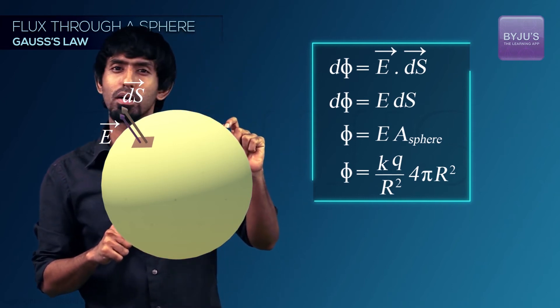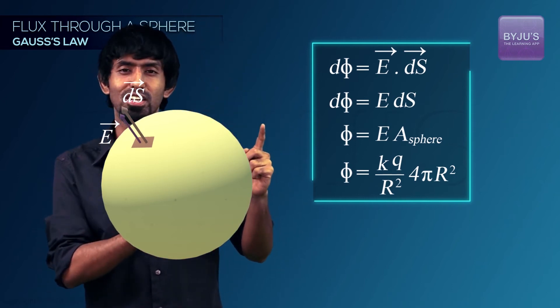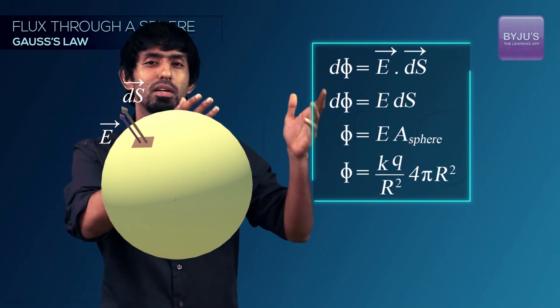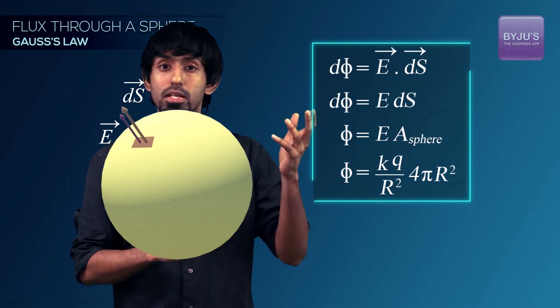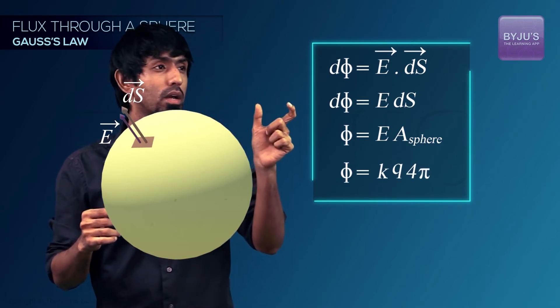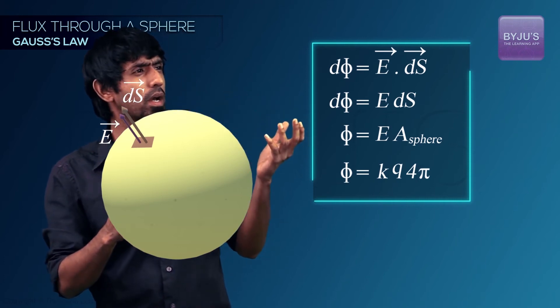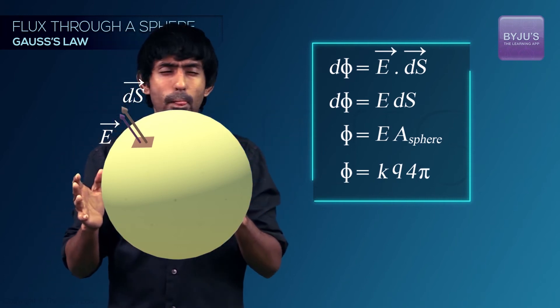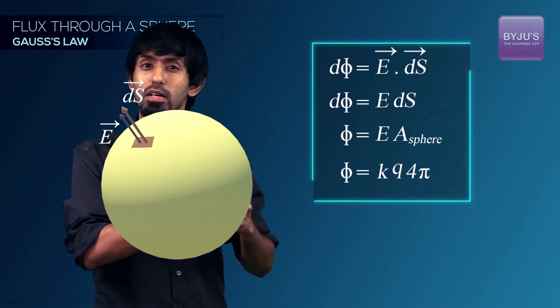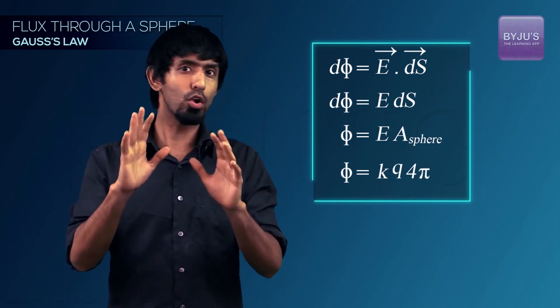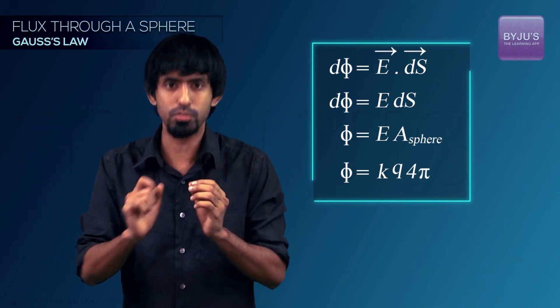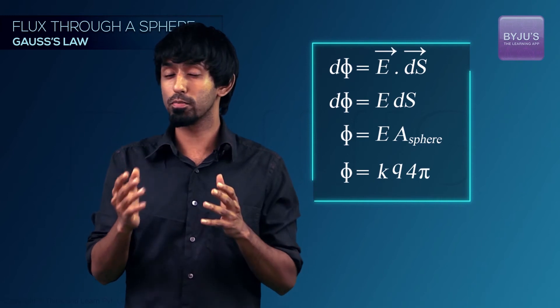Now observe something. Have you already observed it? What is that? Some very important variable is going away. What's going away? The radius of the sphere is going away. So you have kq into 4π as your answer. kq into 4π has nothing to do with your radius of the sphere. Which means that whatever radius you've taken, you've got the same answer. Now hold on to that result. Because this means that I could have taken a much much larger sphere, a much much smaller sphere, and the net flux through that would have been the same.